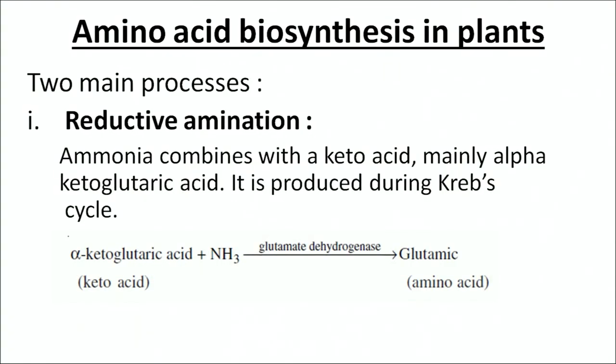Amino acid biosynthesis in plants happens by two main processes. The first is reductive amination. In this process, ammonia combines with a keto acid — mainly alpha-ketoglutaric acid. We have studied how alpha-ketoglutaric acid is generated in the Krebs cycle (TCA cycle). This keto acid combines with ammonia in the presence of the enzyme glutamate dehydrogenase to form glutamic acid, which is one of the chief amino acids in plants.